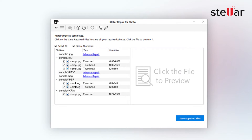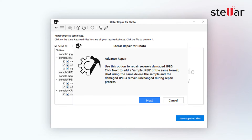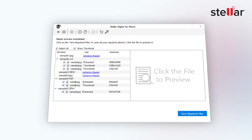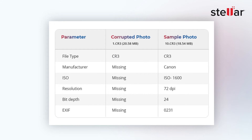Whereas, Stellar Repair for Photo uses file type, manufacturer, ISO, resolution, bit depth, EXIF data, and other information from the sample file to repair corrupt photo files.